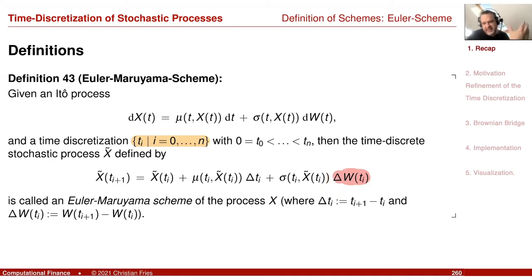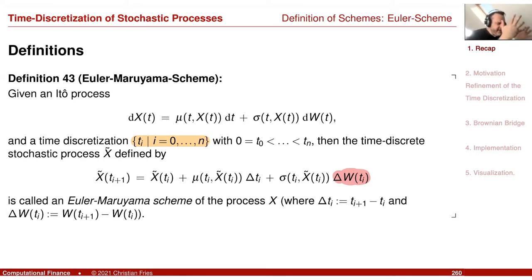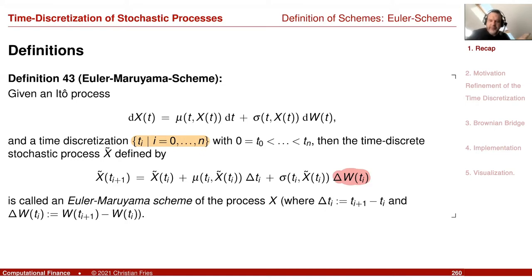The sequence of delta W's can be interpreted as a random vector. The random number generator then operates in a higher dimension, which may degrade its quality and thus the quality of the approximation in terms of Monte Carlo error. So choosing more time points will reduce the time discretization error if one exists, but it may increase the Monte Carlo error by degrading the random number generator quality.